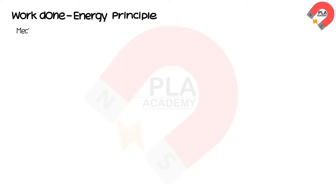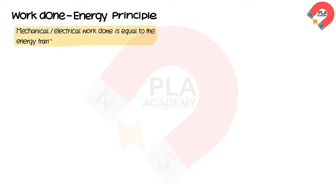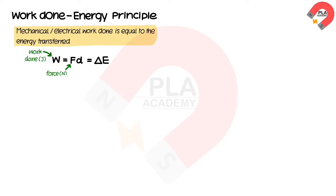Work done and the energy principle state that mechanical or electrical work done is equal to the energy transferred. We can express this relationship with the equation W = Fd = ΔE, where W represents the work done in Joules, F represents the force in Newtons, d represents the distance moved in meters, and ΔE represents the energy transferred.